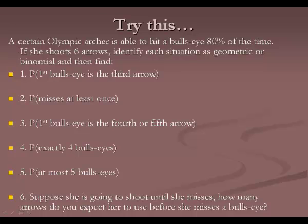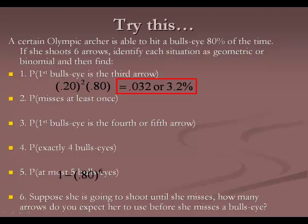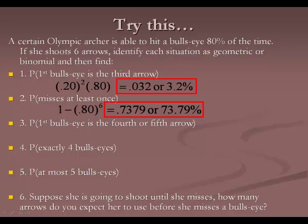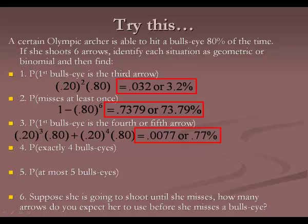For the archer example: question 1, the first bullseye on the third arrow means two misses then a make — 0.2 squared times 0.80 gives 0.032, or 3.2%. To miss at least once in six shots, go backwards: one minus 0.8 to the sixth gives 73.79%. For the first bullseye being on the fourth or fifth arrow, calculate each probability separately and add them: three misses and a make plus four misses and a make gives about 0.77%.